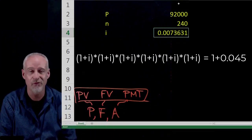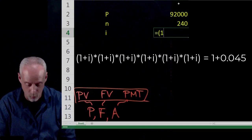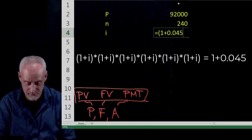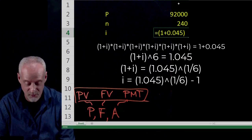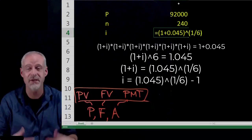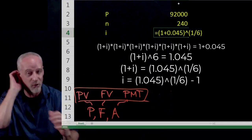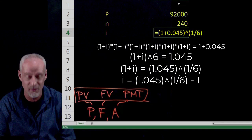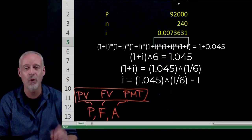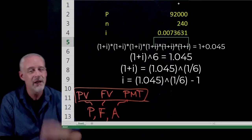And the way to do that in this formula is I'll type it in again so you can see it. So it's 1 plus 0.045 raised to the power of 1 sixth, which is equivalent to the sixth root. So I take the sixth root of that whole thing. That's the calculation. And then to convert it back to a rate, I subtract off the 1. And that gives me the 0.007363. It's just math.